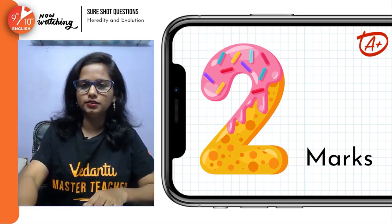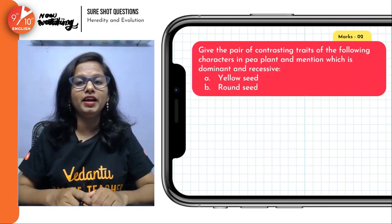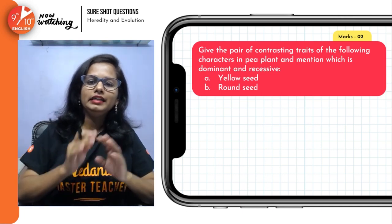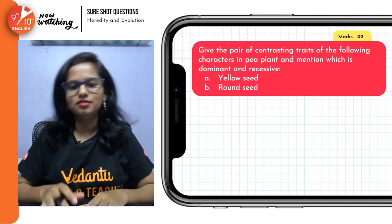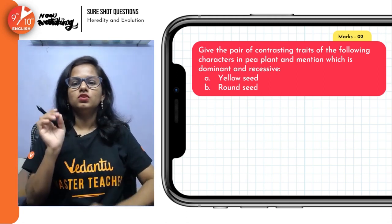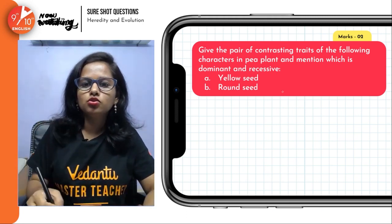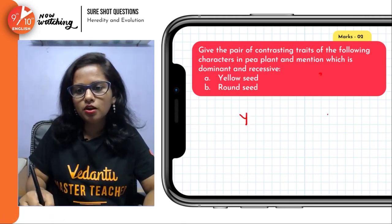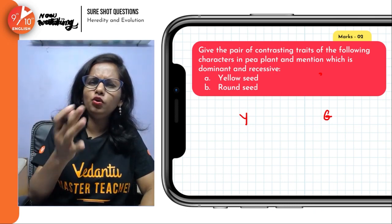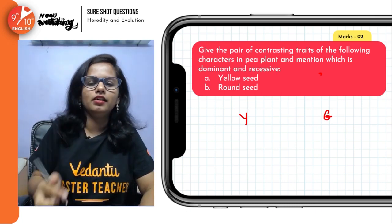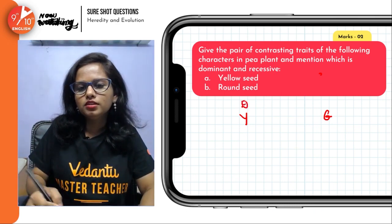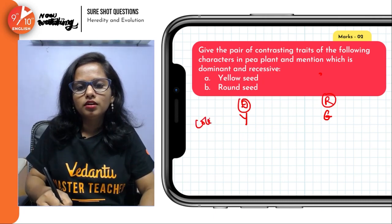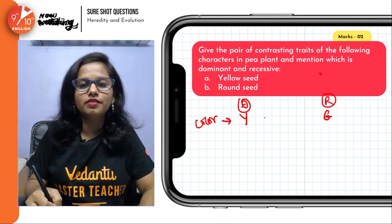Let's first discuss two markers. So the first question: give the pair of contrasting traits of the following characters in terms of dominant and recessive. So for seed color, there's yellow and green. Yellow is the dominant and green is the recessive. The symbol used here is capital Y for dominant and small y for recessive.